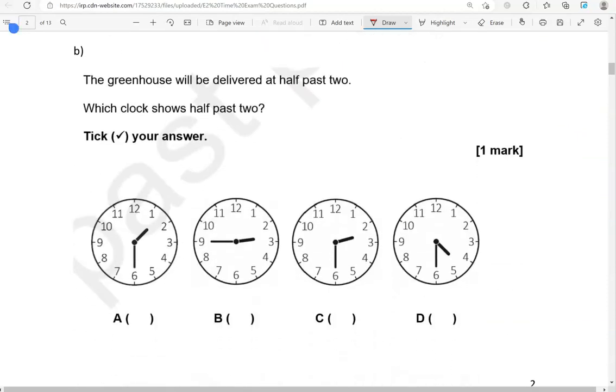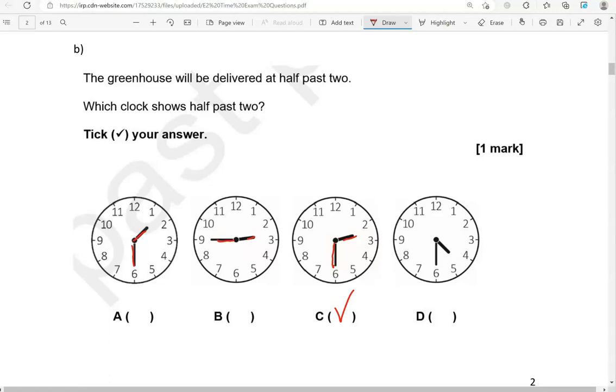The greenhouse will be delivered at half past two. Which clock shows half past two? Tick your answer. So, looking at option A, this is half past one. It hasn't reached two yet. Looking at option B, this is quarter to three. Looking at option C, this is half past two. Option D is half past four. So, the only correct option is option C.